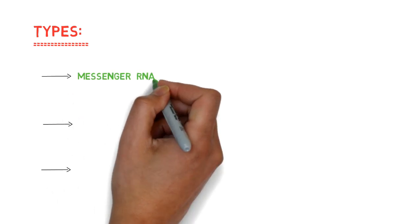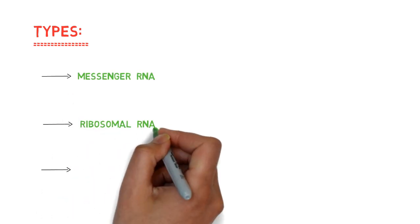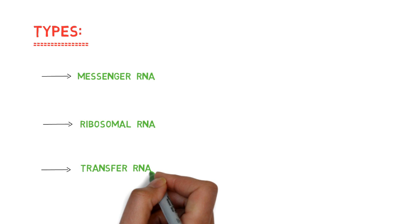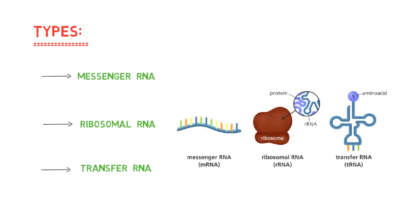RNA has three main types: messenger RNA, ribosomal RNA, and transfer RNA. All these types of RNA are involved in gene expression.